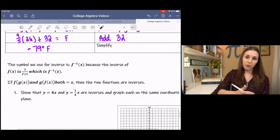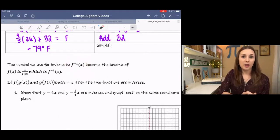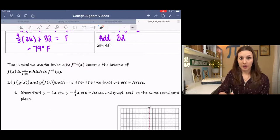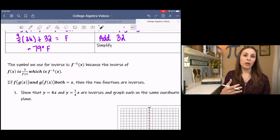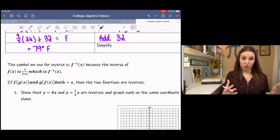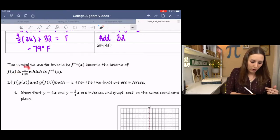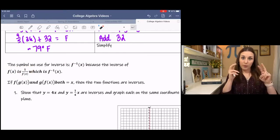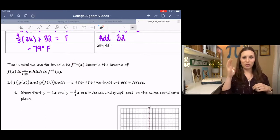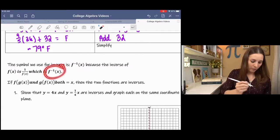The symbol we use for inverse is this: F to the negative one of X, or F inverse of X. And it kind of makes sense because a negative exponent indicates a fraction. And so if we have f(x), its inverse would be the reciprocal. And it's kind of the opposite. That is F inverse of X.